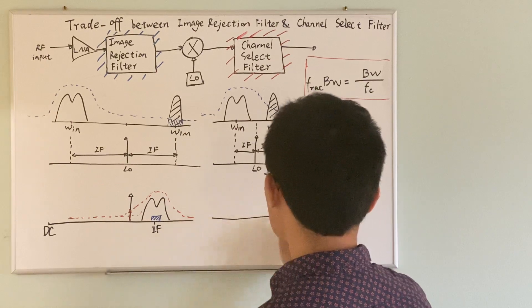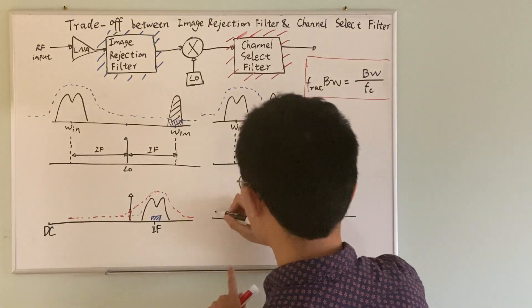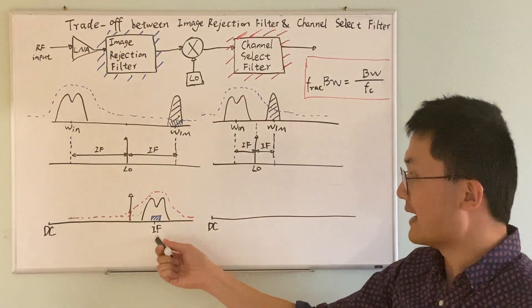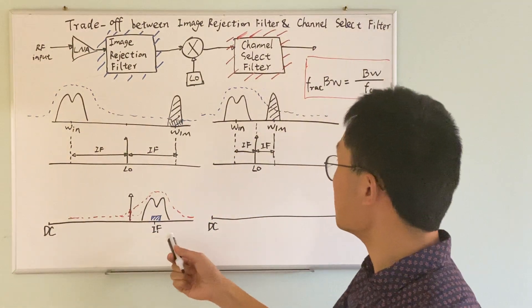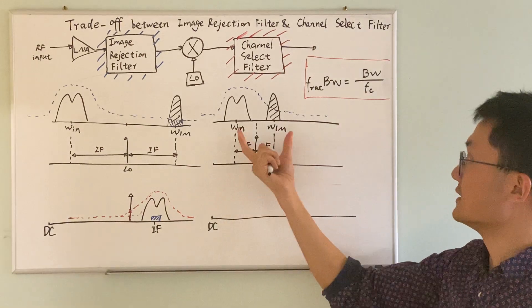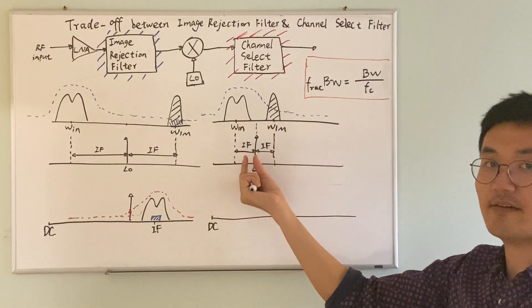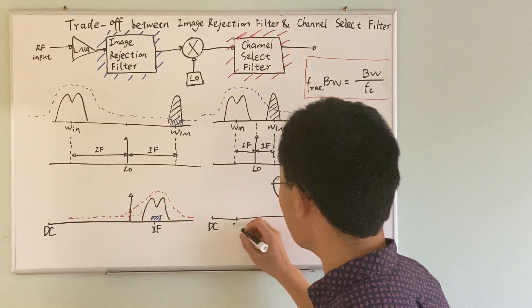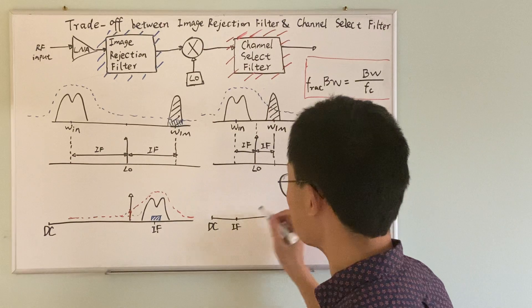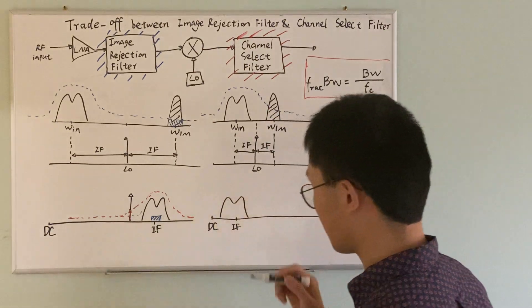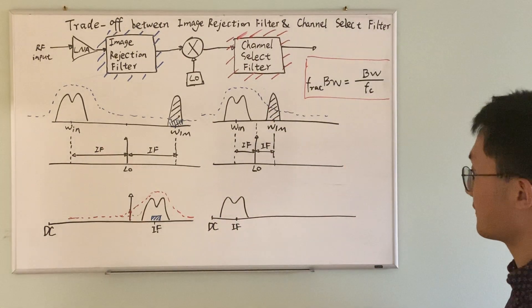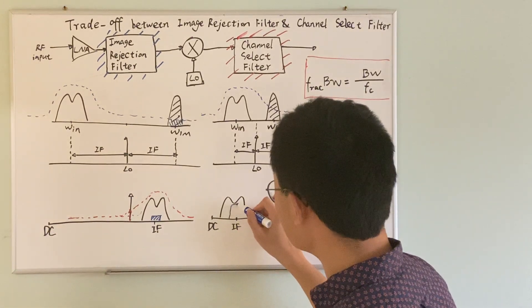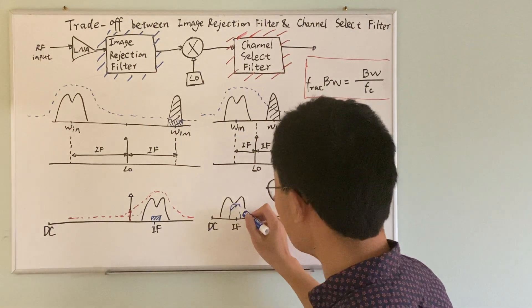And after we mix the two, unlike the first scenario where the IF is pretty far from DC, in this case because they're so close to each other, the IF is small, which means that the IF after the mix is very close to the DC.